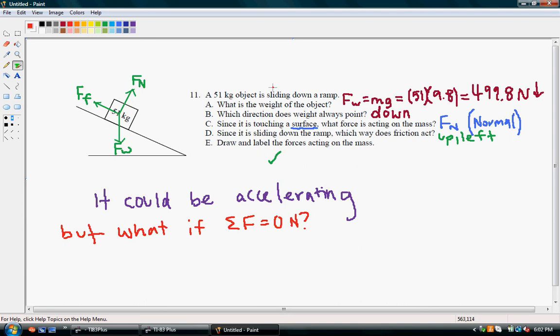We know that the object is sliding down the ramp, and if it had a net force of zero, what could it be doing? It could be moving at a constant speed.